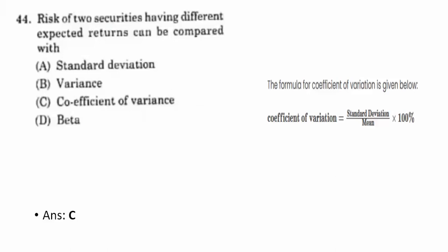Forty-fourth question: the risk of two securities having different expected returns can be compared using the coefficient of variance. The coefficient of variance formula is: standard deviation divided by mean, multiplied by 100%. If you want to compare any two risks with different expected returns, use this statistical tool.